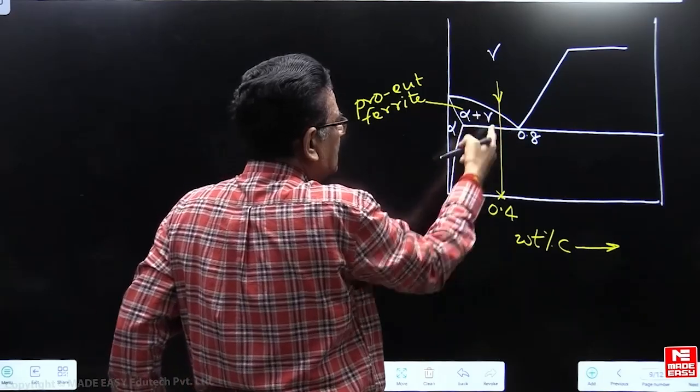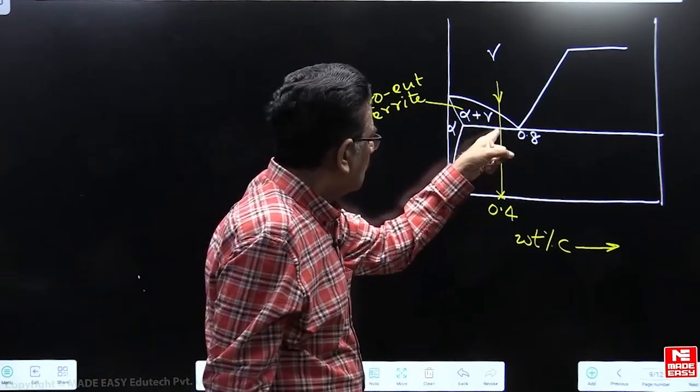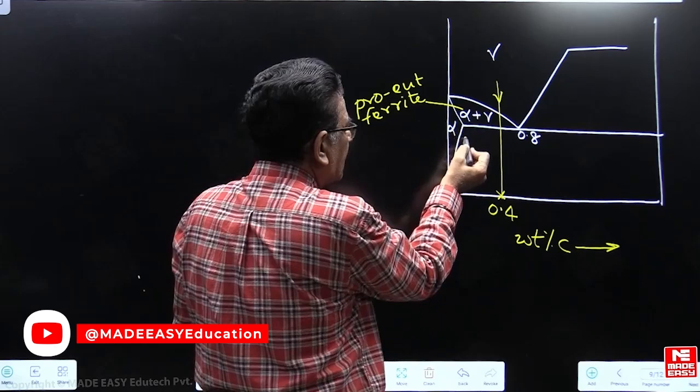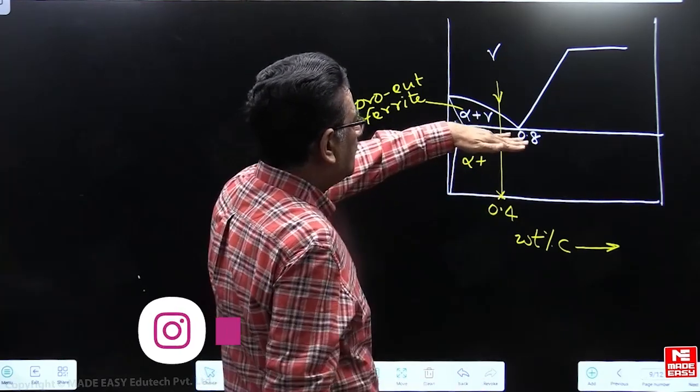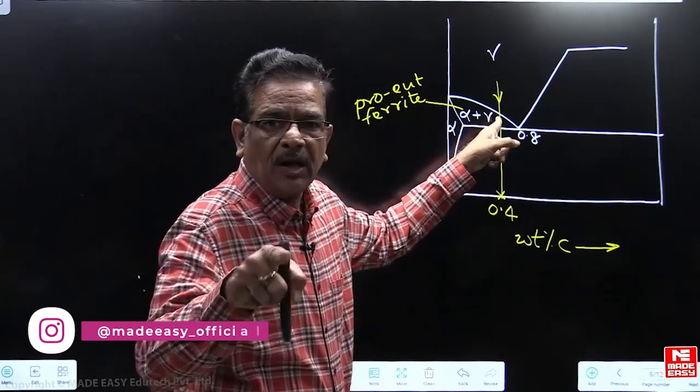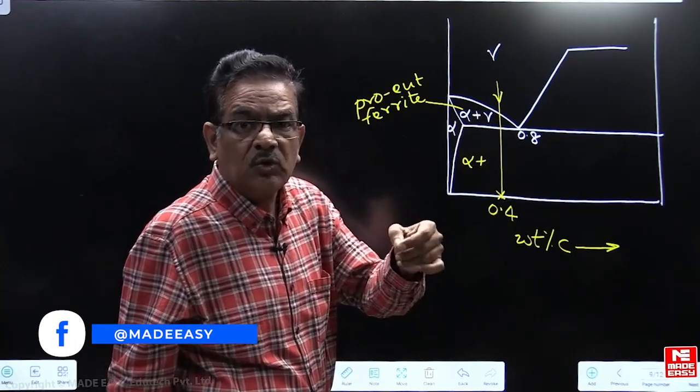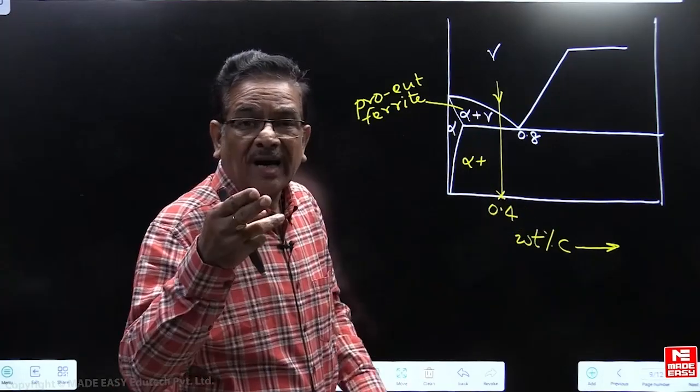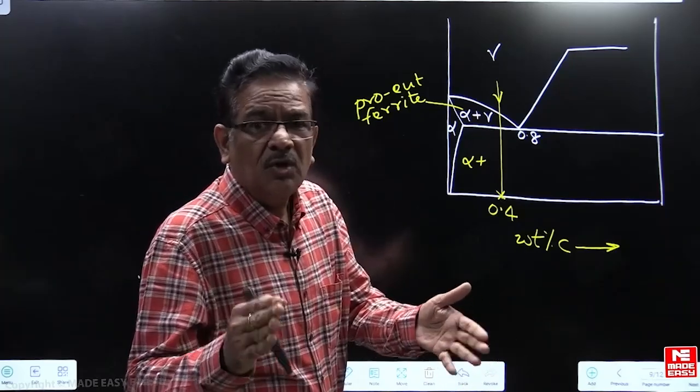Now if you cool this particular alpha plus gamma mixture of two phases to a temperature below eutectoid temperature, what happens is this proeutectoid ferrite will come down as it is, but below this eutectoid temperature, austenite will not be stable because from eutectoid reaction, we teach the students that when austenite is cooled to a temperature below eutectoid temperature, it becomes metallurgically unstable and hence it decomposes into ferrite.